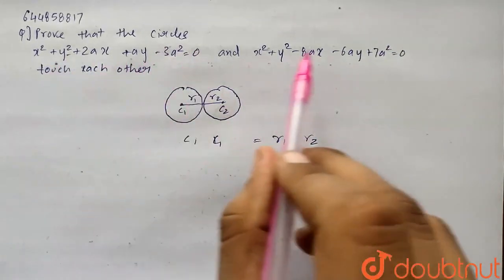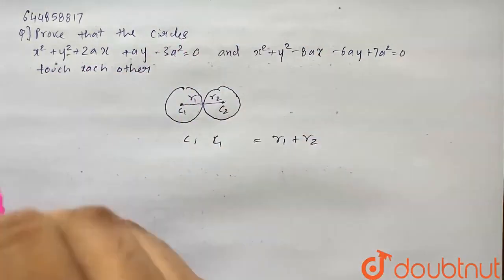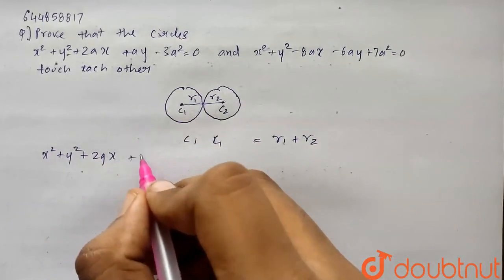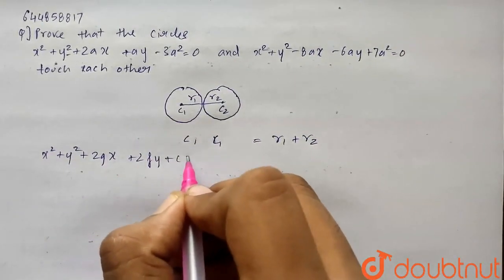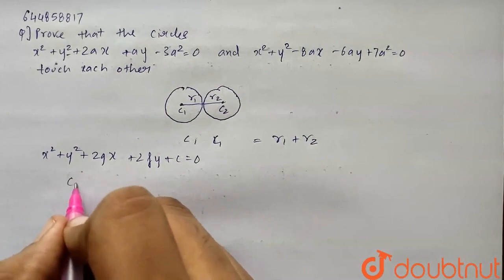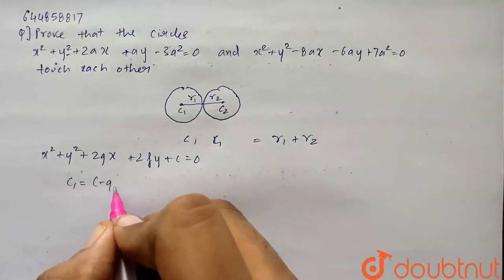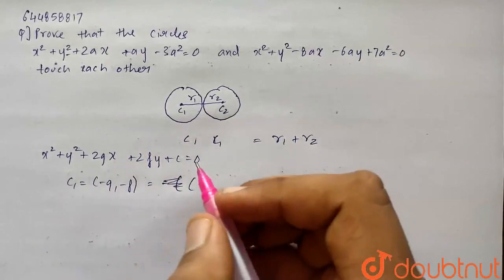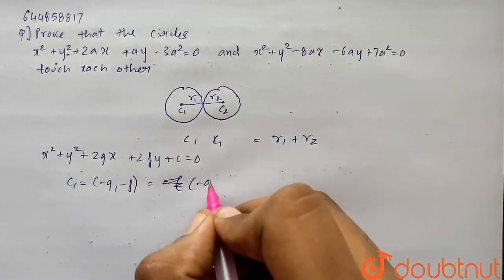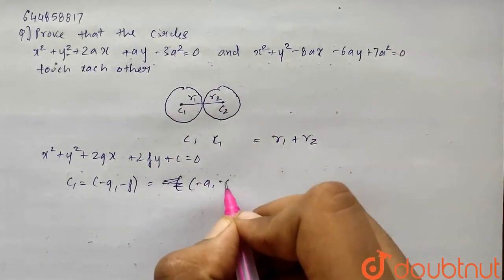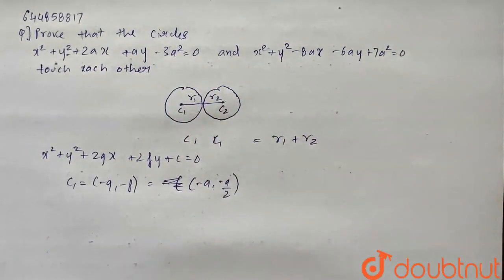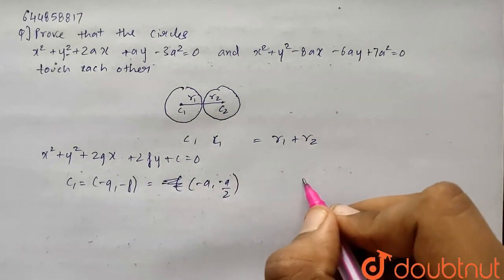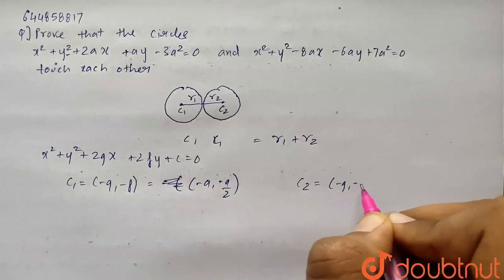We will firstly find the center and the radius of each circle. Comparing with the general equation x squared plus y squared plus 2gx plus 2fy plus C equals 0, C1 will be minus g comma minus f, so it will be minus a by 2. Therefore we got C1, and C2 will also be minus g comma minus f from comparing the second equation.